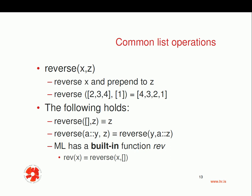Now let's look at another operation called `reverse`. It takes the same number of parameters as append — x and z — and it reverses x and prepends it to z. So if I do `reverse([2,3,4], [1])`, I get `[4,3,2,1]`. Why? Because I reversed the first list to get `[4,3,2]`, and prepend it to the second list `[1]`, giving `[4,3,2,1]`.